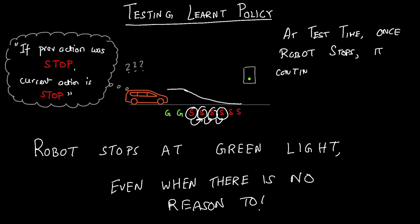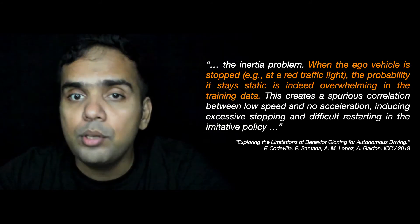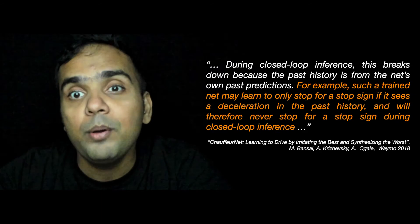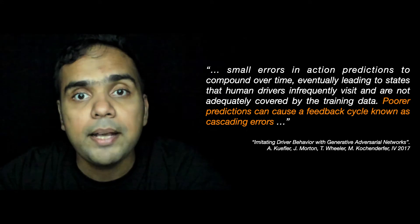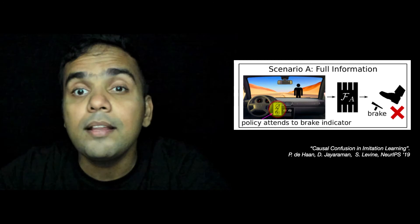And that is what happens at test time. Once the robot begins stopping, it continues stopping. And this creates what we call a bad feedback loop. In case you're wondering, is this even a real problem? Let me assure you, it is. Here are four papers from the last few years that talk about this very issue. Codevilla et al. described this exact example and call this the inertia problem. Bansal et al. from Waymo described the same problem as well. Kuffler et al. talk about this more generally as a feedback cycle that can lead to cascading errors. And finally, DeHaan et al. put an interesting twist where the previous action feature shows up as the brake light indicator.